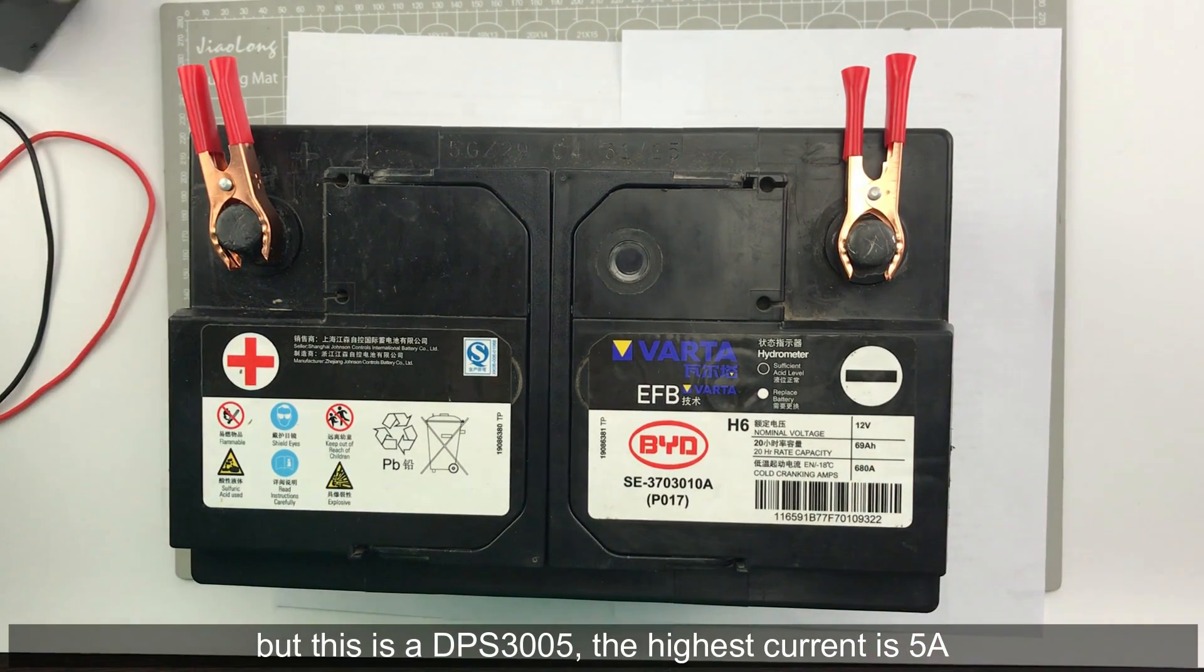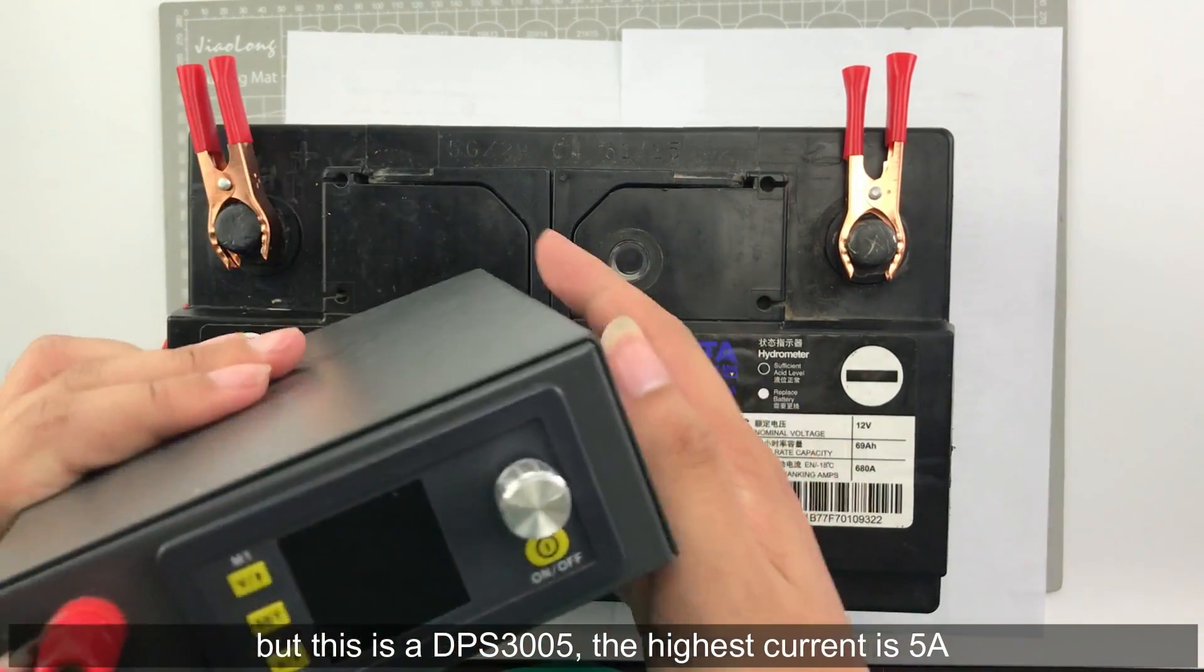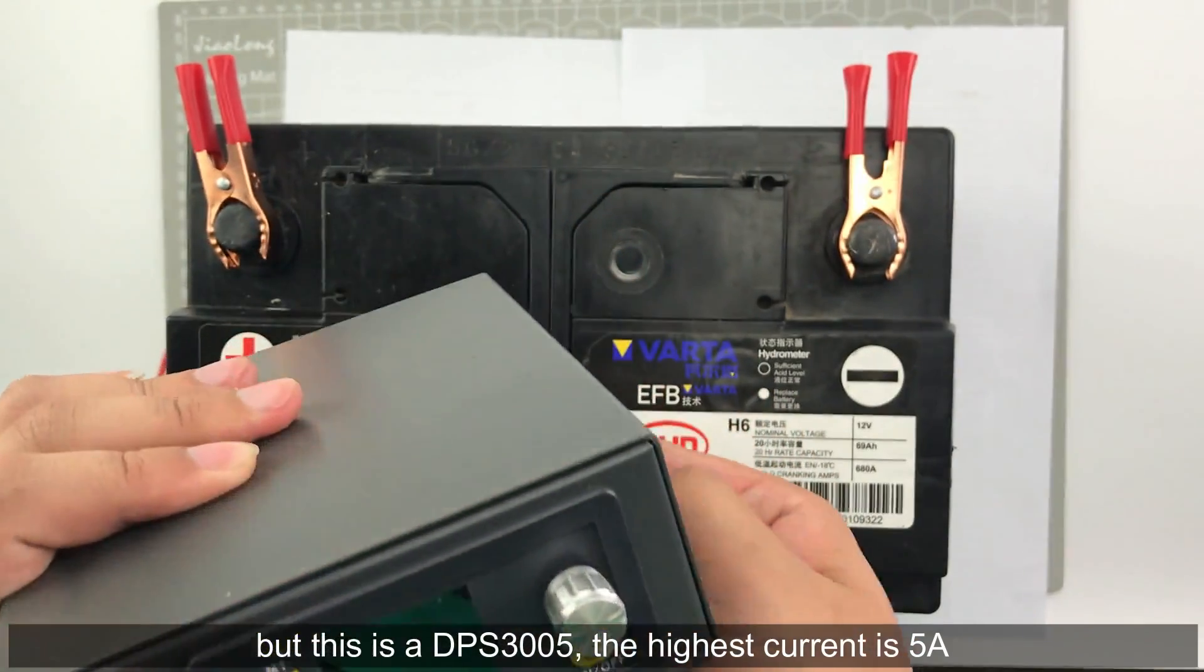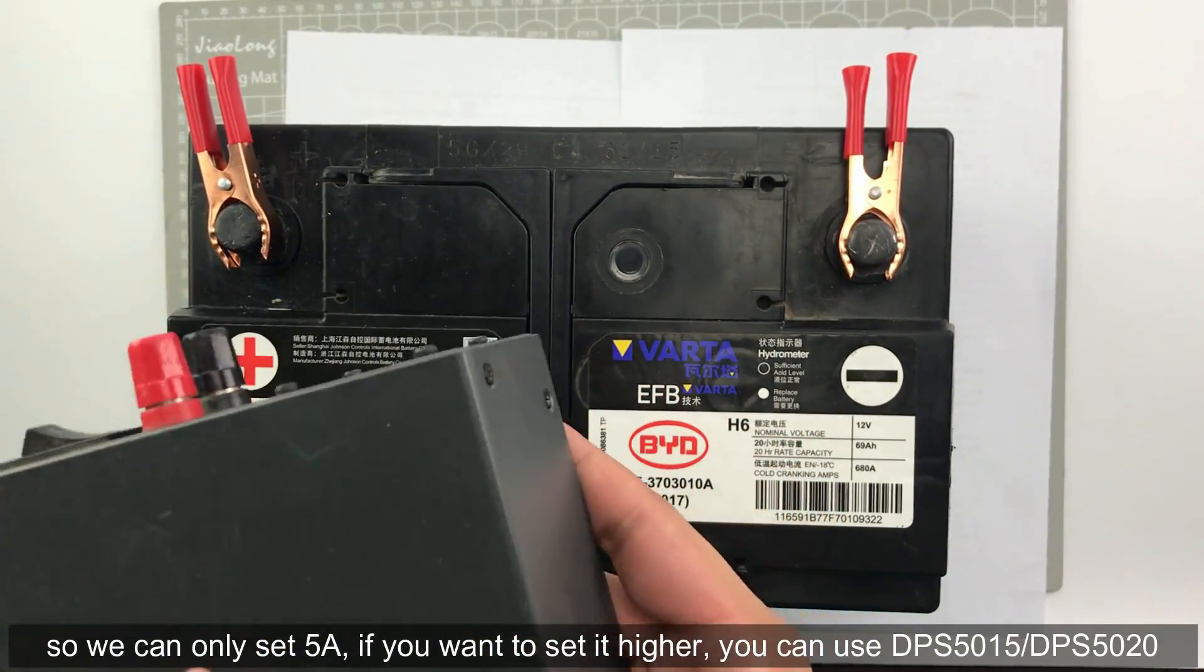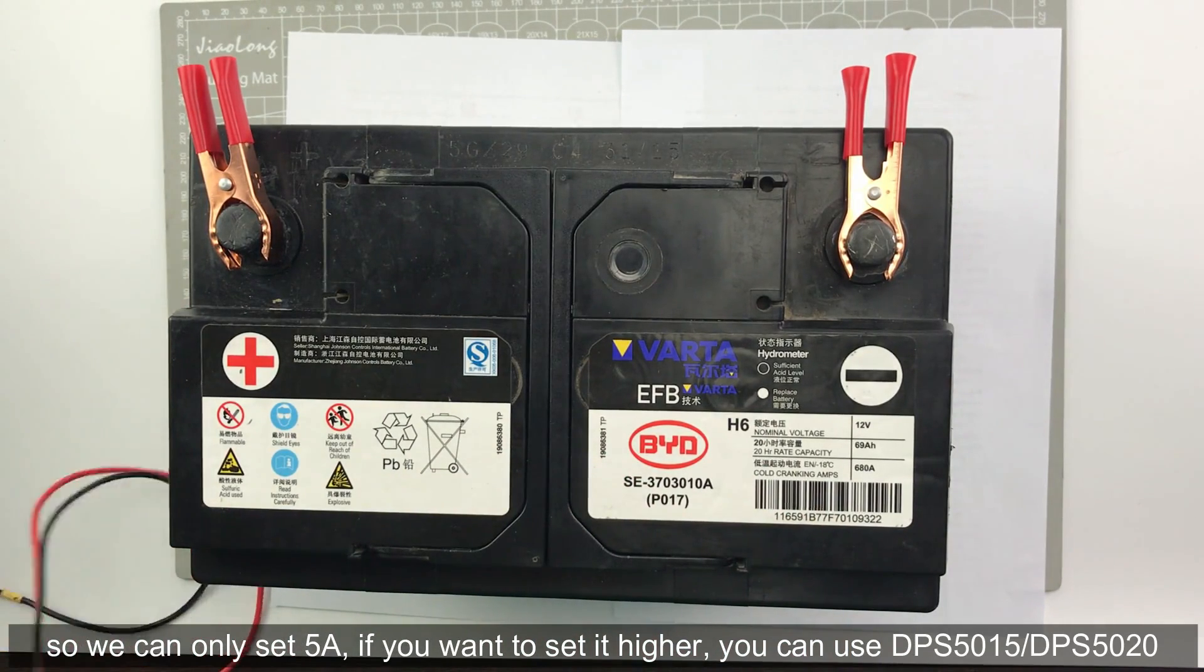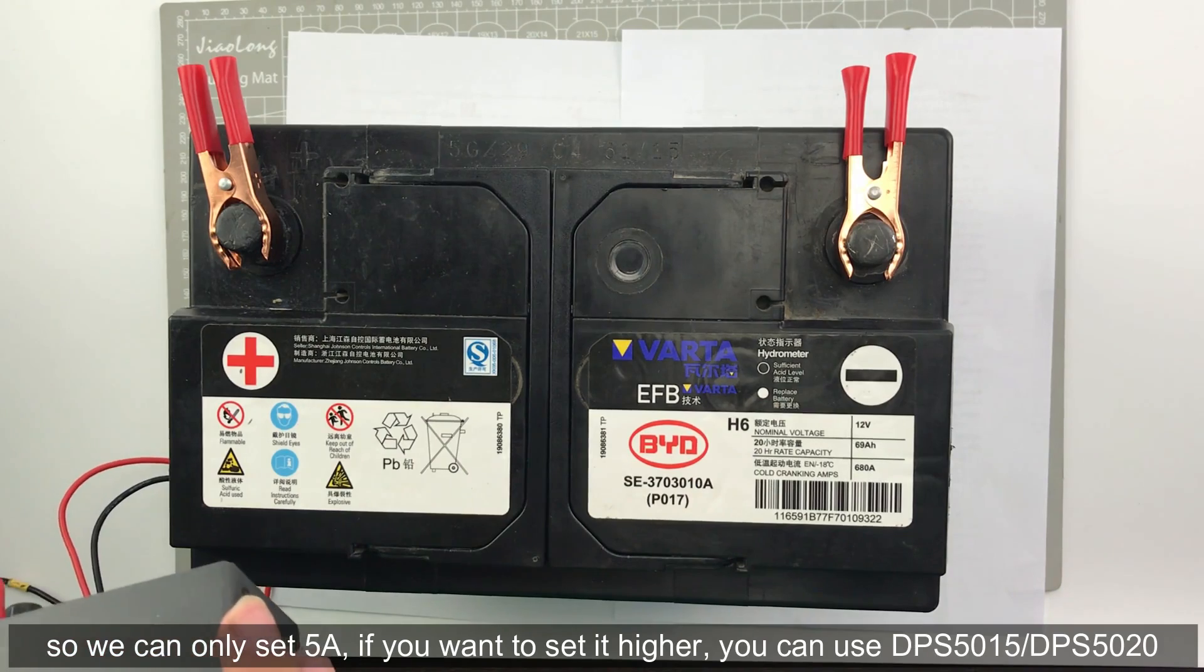But this is a DPS3005, and the highest current is 5 amp, so we have to set 5 amp. If you want higher current, you can use DPS5015 or DPS5020.